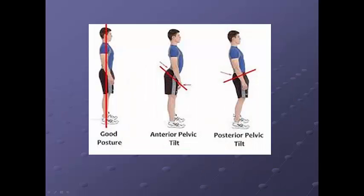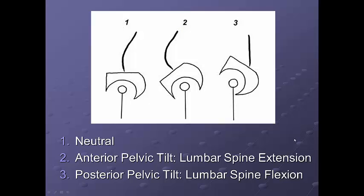We can see the different postures: anterior pelvic tilt, or kyphosis-lordosis, or posterior pelvic tilt, which can result in a sway-back spine. Here's a clearer diagram. This is neutral — here's your pelvis, femur, and lumbar spine. If you go into anterior pelvic tilt, it pulls the lumbar spine more into lordosis or extension. If you go into posterior pelvic tilt, you will flatten or flex the spine.